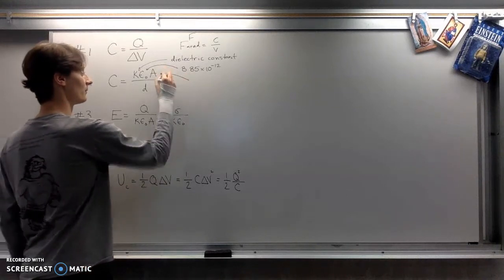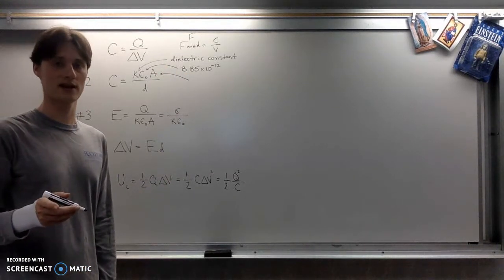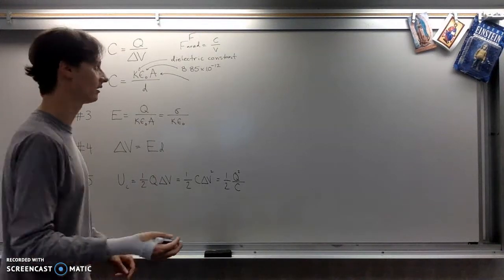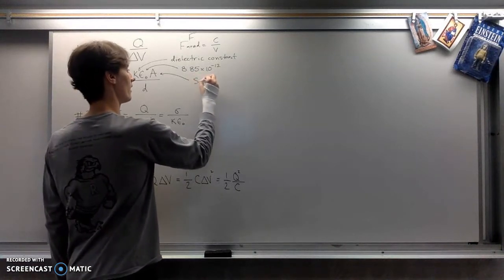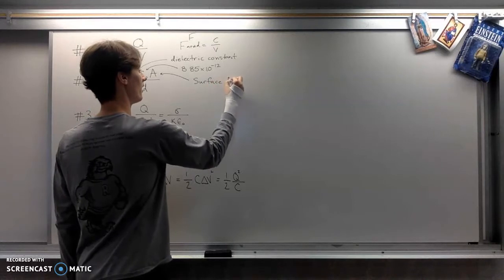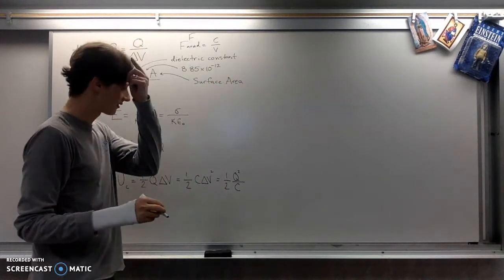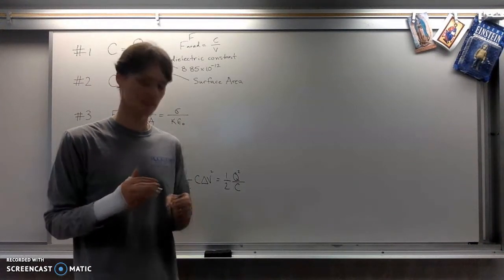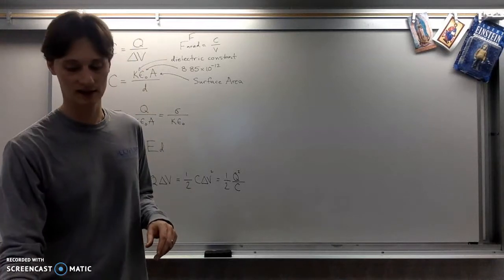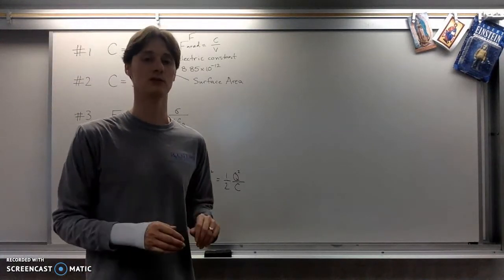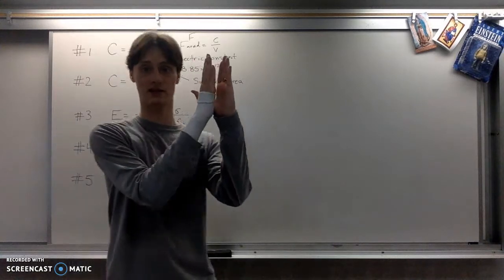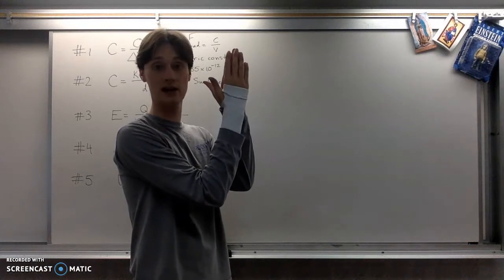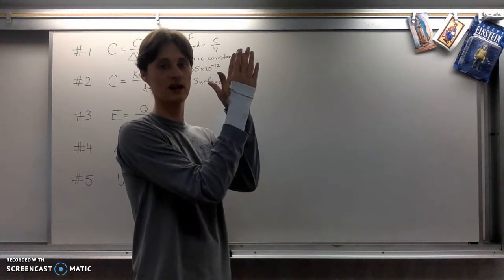The A, if you recall, the picture of the capacitor was parallel plates. The A is the surface area of the plates. It's really the surface area of just one plate. So don't double it because there's two plates. It's the surface area of a plate. Although, to be super technical, it's the area of overlap between the two plates. So if I've got two plates like this that overlap perfectly, great. So there we have it. The area would be whatever the area of my hand is because that's my plate.